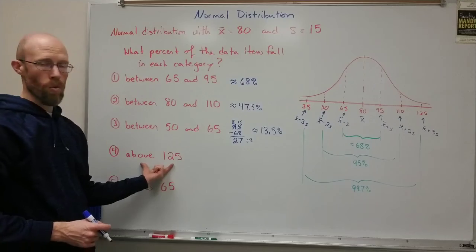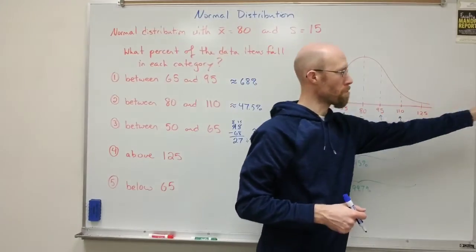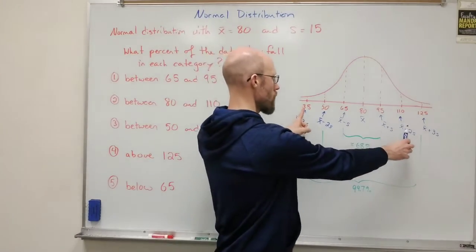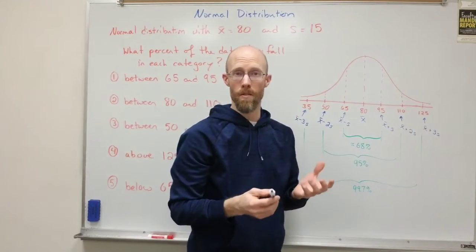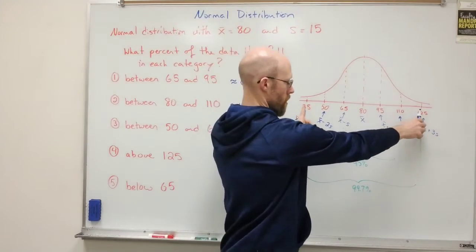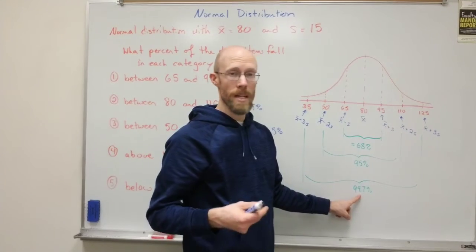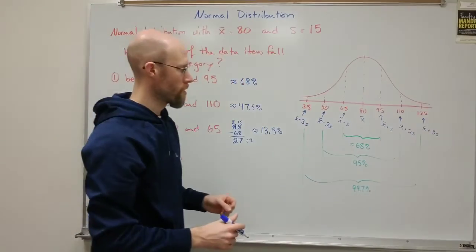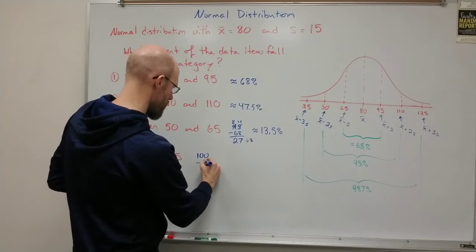If you want to look above 125. So 125 is way out here on the end. That's three standard deviations out and we want everything beyond that. You can think about everything between 35 and 125. So that's almost everything I'm looking for, except I'm also including some stuff out here I want to subtract off, but this is 99.7. The difference between that and everything is 0.3. That difference is split up evenly between the two tails. I only want the right tail. So I take the 0.3 and cut that in half.